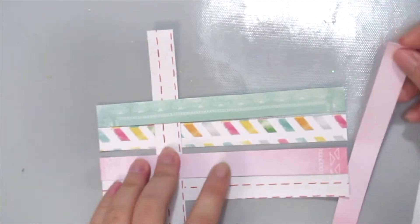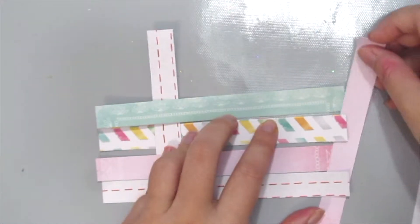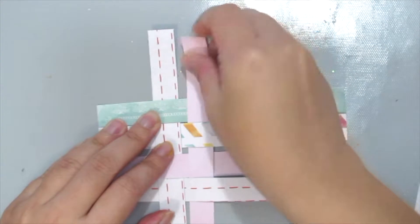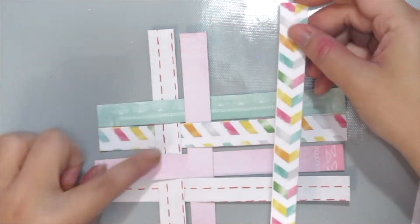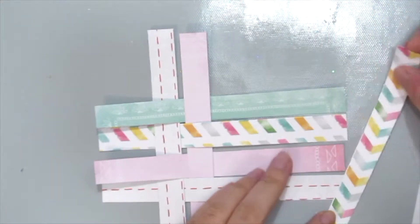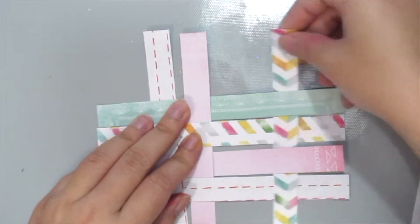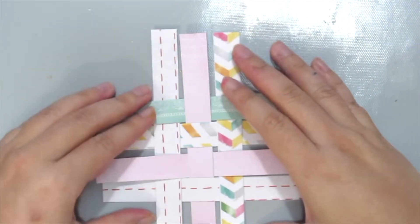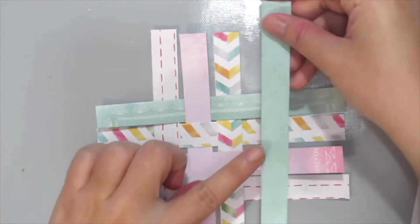The second strip is under, over, under, and over. So it's as simple as that. The third strip would be like the first: over, under, over, and under. And the fourth will be like the second one.